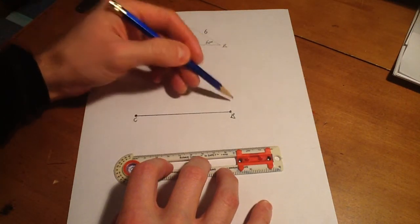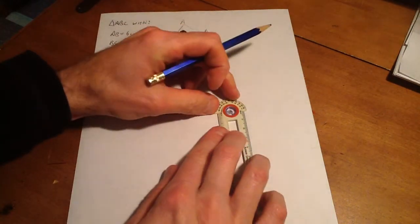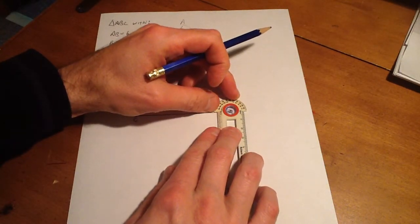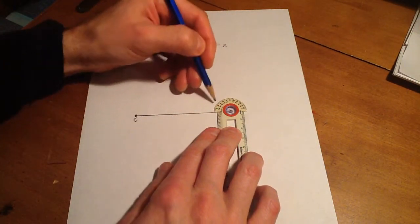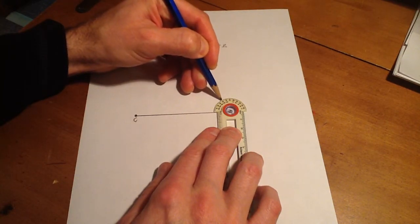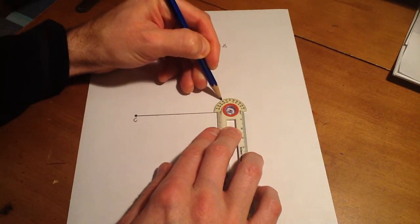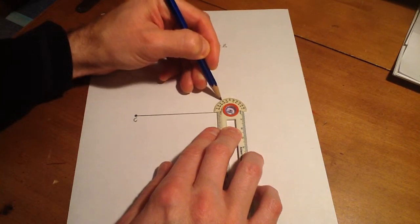Now I know angle B has to be 60 degrees, so I'm going to put my protractor at B and find 60 degrees here. 15, 30, 45, 60 is right here. I know it's hard to see because it's so small, but 60 is there.